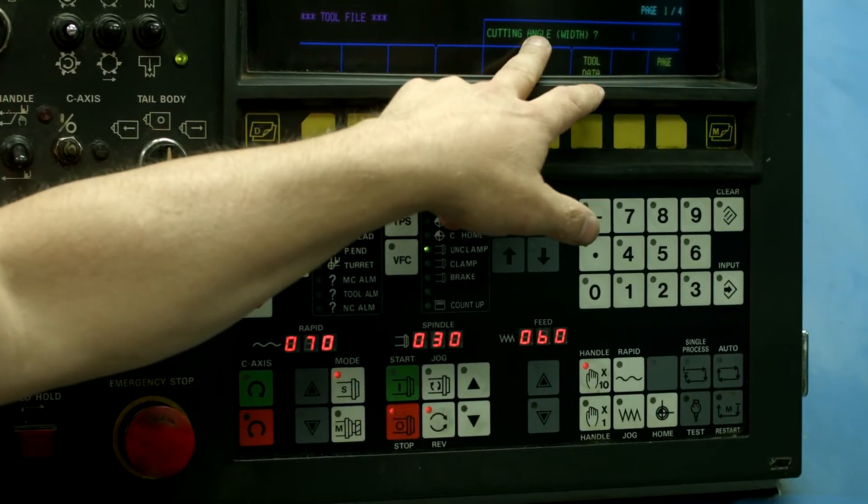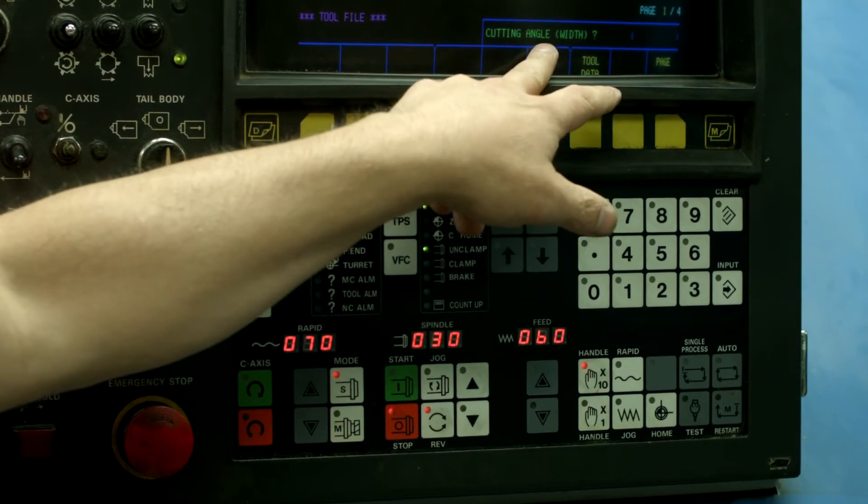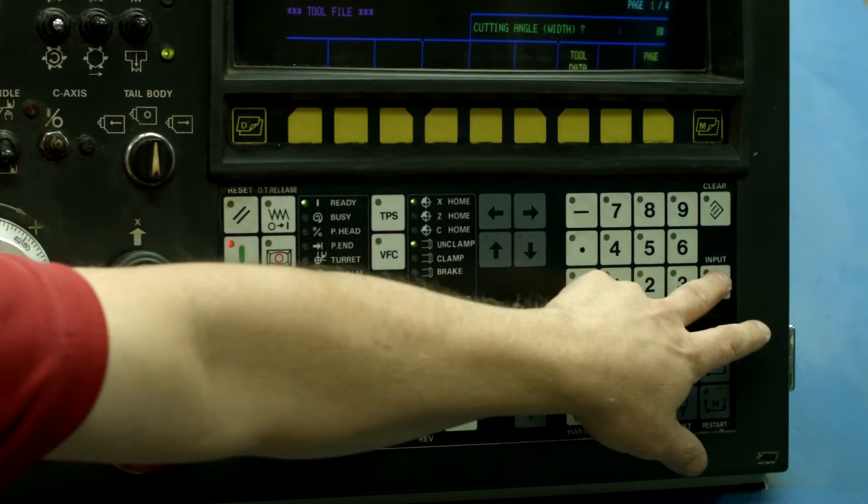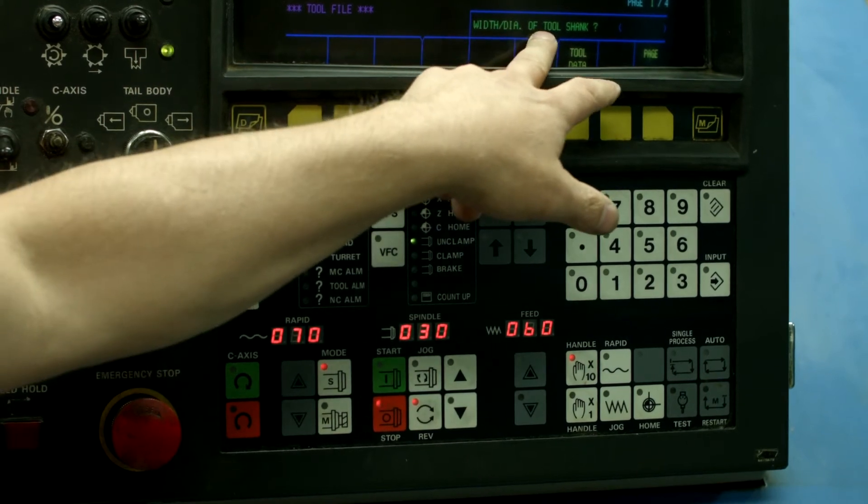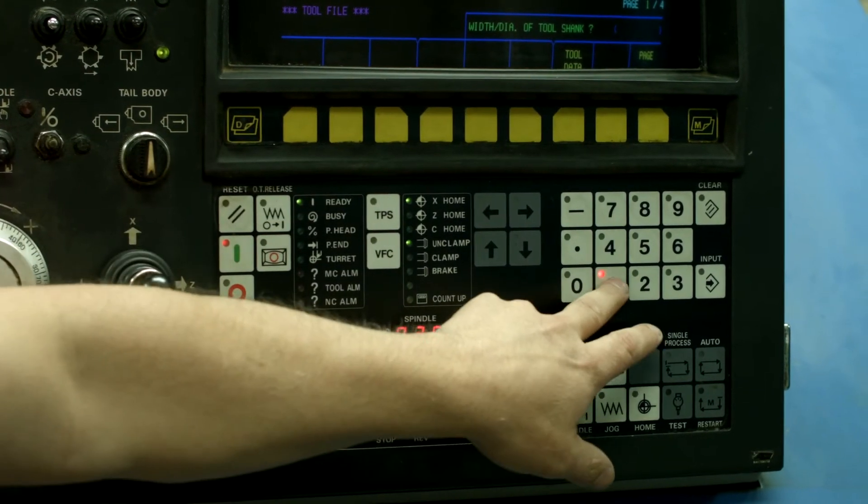And then the cutting angle, the width, this is the insert angle, this is 80 degrees. And then width or diameter of the tool shank is a 1 inch shank.